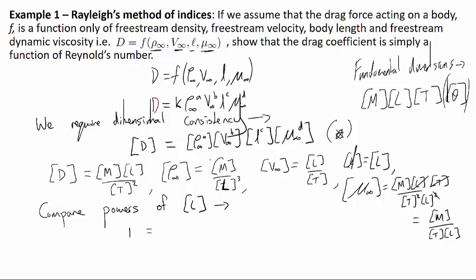On the right-hand side, we've got D, which is MLT^-2, so there's effectively a power 1 - L to the power 1 here on the left-hand side of the equation. So 1 equals: rho infinity is raised to the power A and has dimensions M/L^3, so the powers of L on the right-hand side will be -3A. V infinity has got an L to the power B, so this is going to be a B here. For L, which is dimension L raised to the power C, that's just going to be a C. And then mu infinity has got a 1/L to the power D, so this is going to be -D on this side, and we call that equation 1.